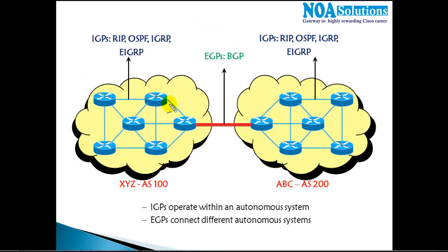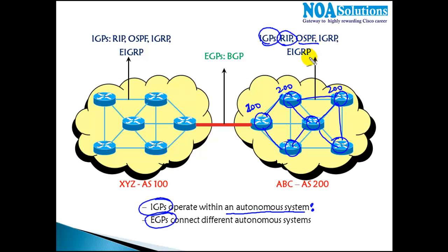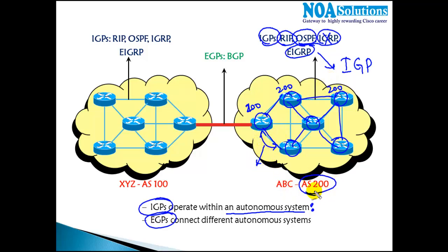Now that we understand AS numbers, the next thing to understand is protocol categories: IGP and EGP. Interior gateway protocols (IGP) operate within the same autonomous system. For example, an organization ABC has routers in different locations all belonging to AS 200, and they use interior gateway protocols to communicate. Examples include RIP (seen in previous sessions), OSPF, and EIGRP — these are all IGP protocols.